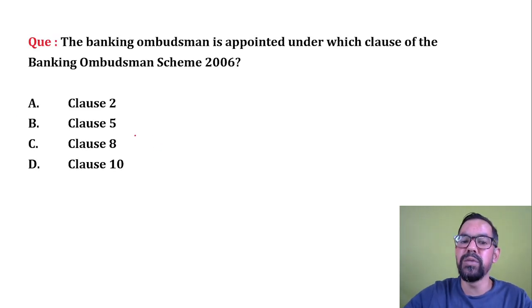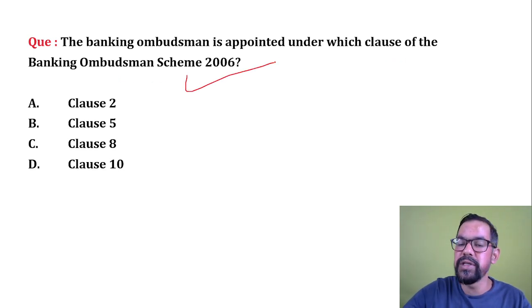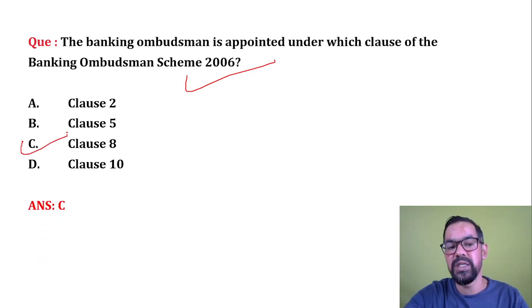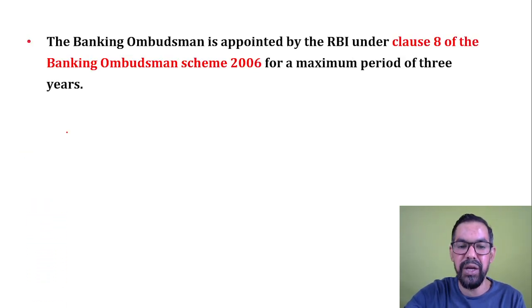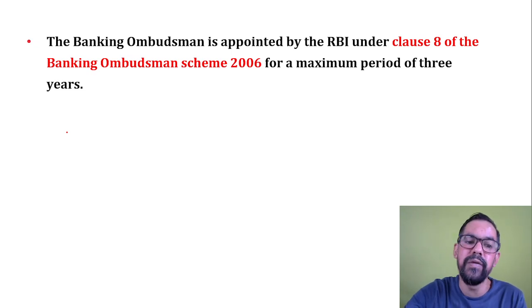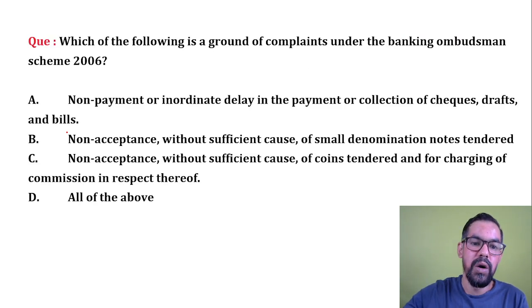Next question: Banking Ombudsman is appointed under which clause of Banking Ombudsman Scheme 2006? They are appointed under Clause 8 of Ombudsman Scheme 2006, appointed by RBI for a period of three years.